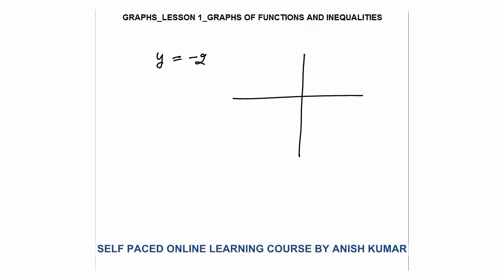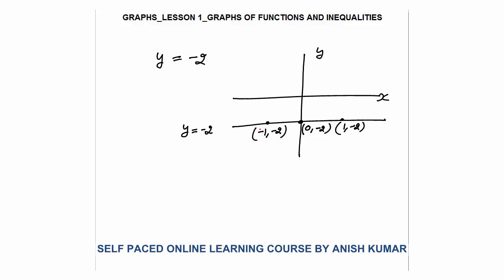Next line is y is equal to minus 2. This is the x-axis, this is the y-axis. This line will cut the y-axis at (0, −2). When x is 0, y will be minus 2. x could be 1 or minus 1, and still y will be minus 2. So each and every point on this line has the value of y equal to minus 2, whatever be the value of x. This is the line of y is equal to minus 2.